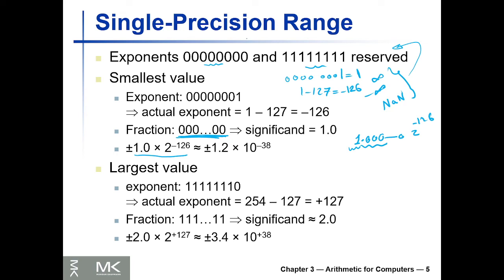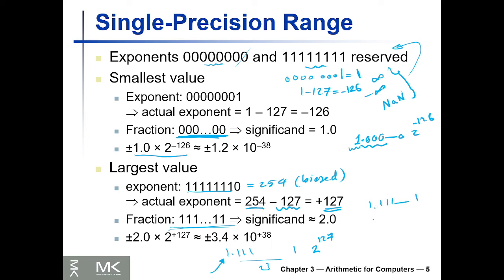The largest biased exponent is 11111110, which is 254; subtracting the bias of 127 gives plus 127. In that case the significand has all ones: 1 followed by 23 ones. The implicit leading 1 is always added. So the largest number is approximately 1.111...1 (23 ones) times 2 to the 127, and since 1.111...1 is approximately 2, this is roughly 2 to the power of 128.